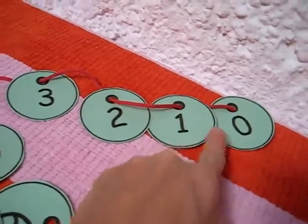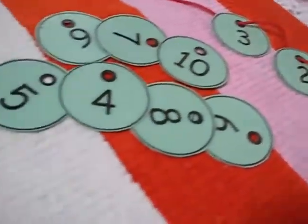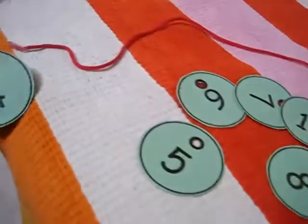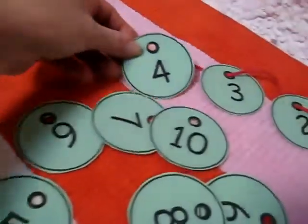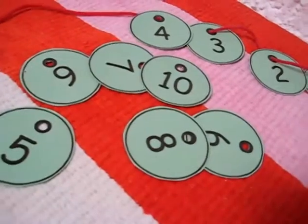So they start with zero, one, two, three, then they would look for the next one, four. And so there they go, stringing it through. And then the five, and on they go, all the way till number ten.